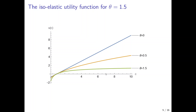What does risk-aversion mean in this context? Basically, it means that an individual with a higher theta gets a much lower utility level for a low consumption level. The risk that an individual wants to avoid is ending up with a low consumption level at some point in time. For the risk-neutral individual the negative utility is bounded. But for the individual with theta equal to 1.5, you get already a very low utility level when consumption goes to 0, so a risk-averse individual would try everything to avoid ending up in one period with a very low level of consumption.